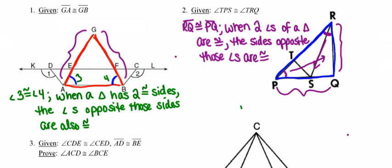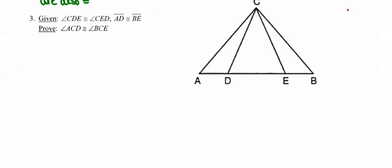Now for the actual proof. In number 3, let's mark the diagram. Angle CDE is the blue angle inside that triangle, and it's congruent to angle CED. Looking at that triangle, it has two congruent base angles, so the sides opposite those base angles must also be congruent — meaning sides CD and CE are congruent. And if those interior angles are congruent, their supplements outside the triangle have to be congruent as well. I'll go ahead and mark those — they might be helpful.